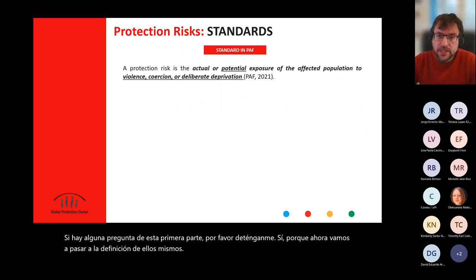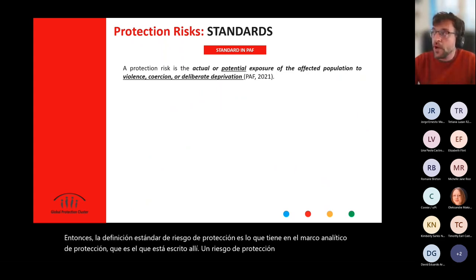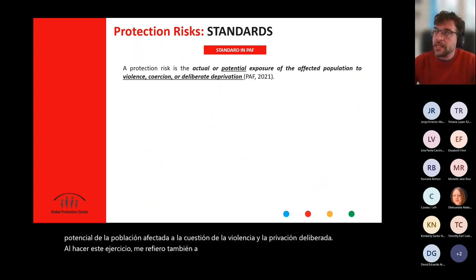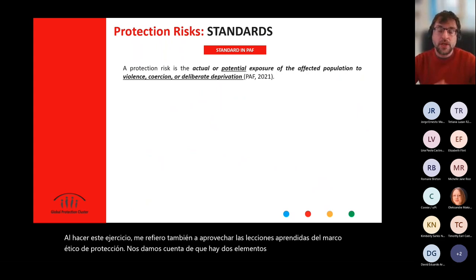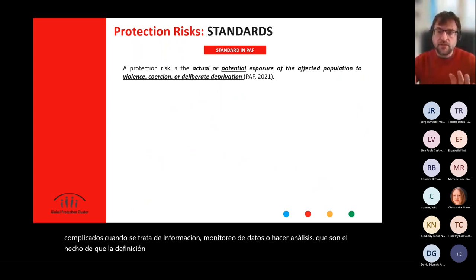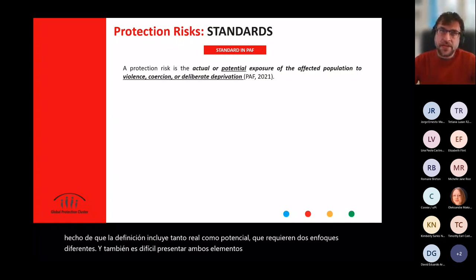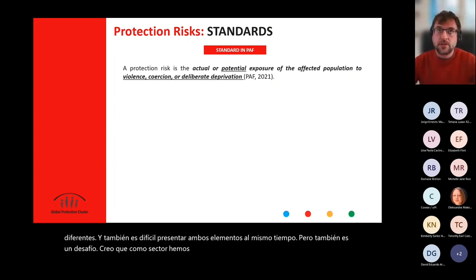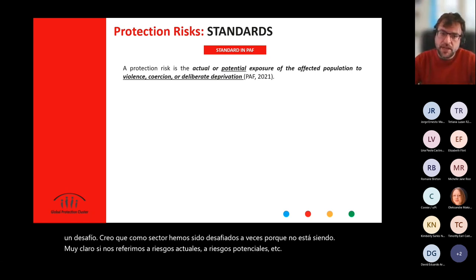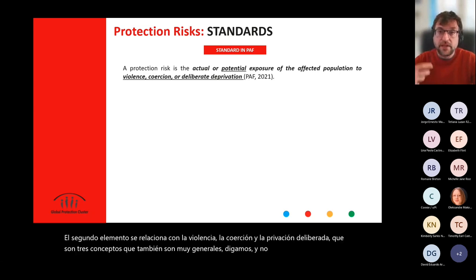The standard definition of protection risk is what you have in the protection analytical framework: a protection risk is the actual or potential exposure of the affected population to violence, coercion, and deliberate deprivation. In doing this exercise, building on lessons learned from the protection analytical framework, we realized there are two elements that are quite complicated. The definition includes both 'actual or potential,' which require two different approaches, and it's not always clear whether we refer to current or potential risks. The second element — violence, coercion, and deliberate deprivation — are three concepts that are very general and not easy to reflect in monitoring and analysis.